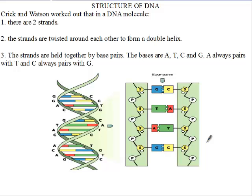So how exactly does DNA look like? Crick and Watson, after using the information, the initial information provided by Rosalind Franklin, worked out that in a DNA molecule there are two strands. So two strands looking this way.